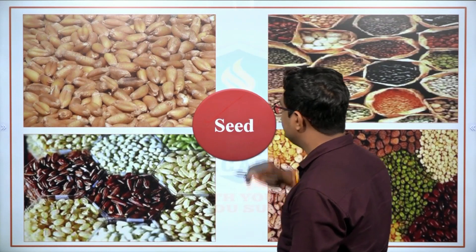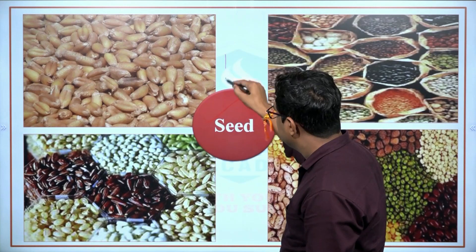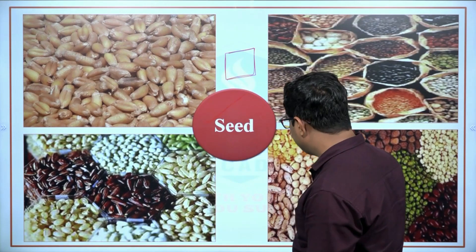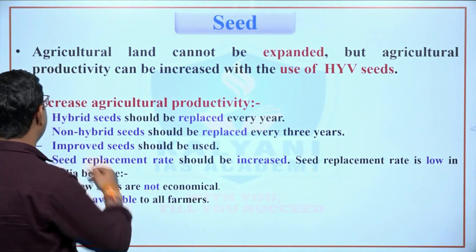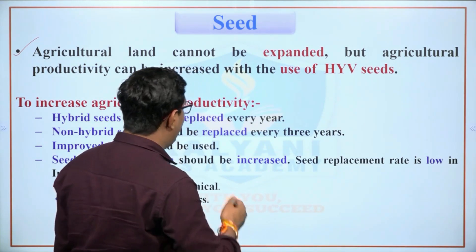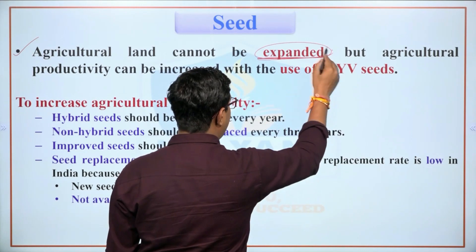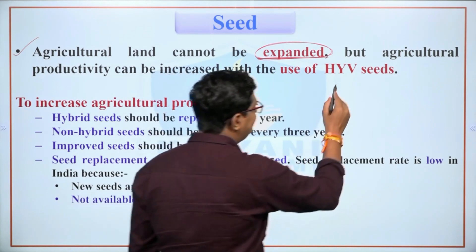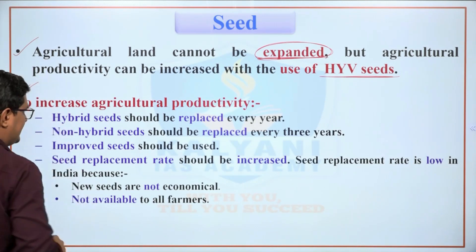The second component is seeds. Assuming a farmer has fertile land, to increase production, high yield variety seeds must be used. Agricultural land is limited and cannot be expanded; therefore, to increase production, high yield variety seeds are essential.